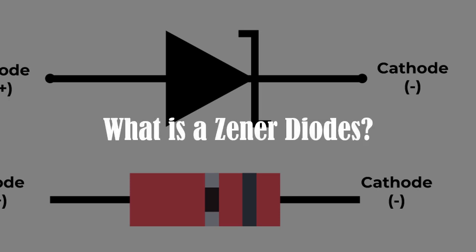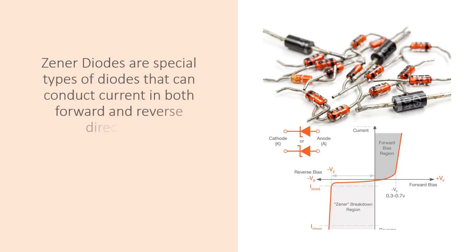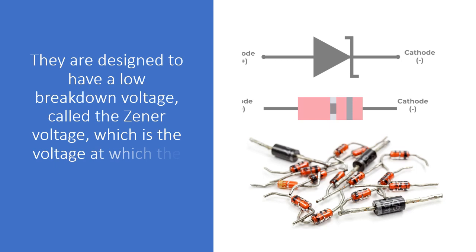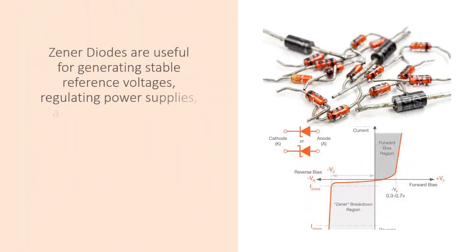Zener diodes are special types of diodes that can conduct current in both forward and reverse directions. They are designed to have a low breakdown voltage, called the Zener voltage, which is the voltage at which the diode starts to allow reverse current. Zener diodes are useful for generating stable reference voltages, regulating power supplies, and protecting circuits from overvoltage.